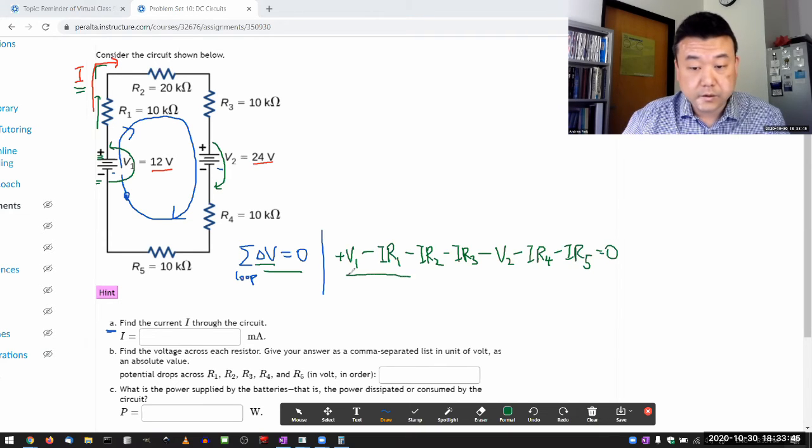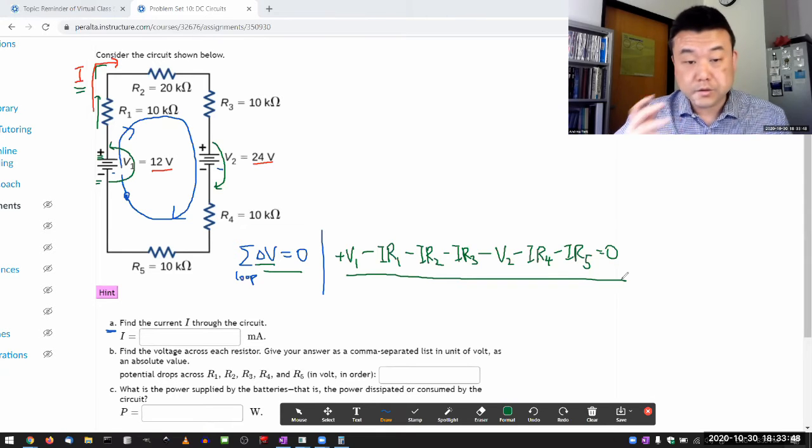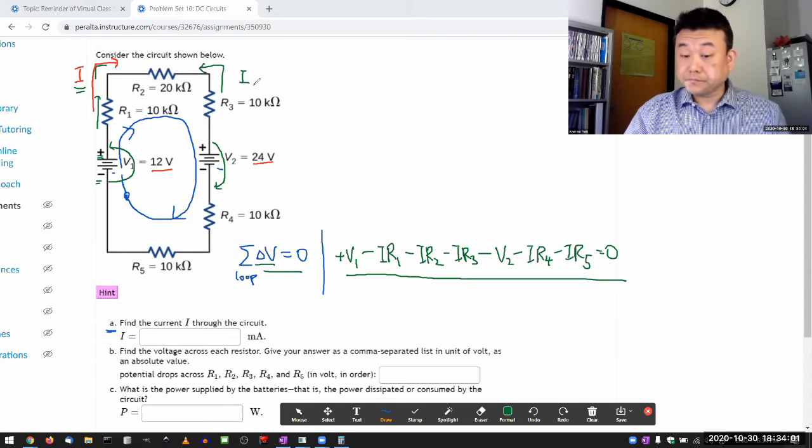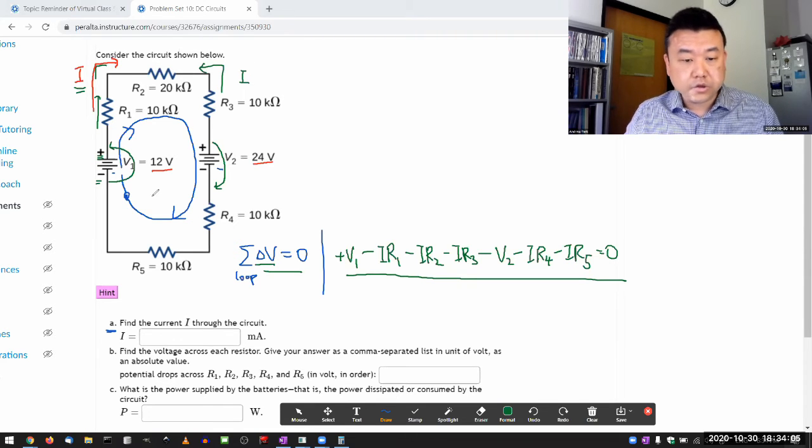You have a single equation with a single unknown I. When you solve for it, you'll get a negative answer because V1 minus V2 is negative, and just take the absolute value and figure, okay, the actual current flows this way. So once you find the current, then the rest should be easy.